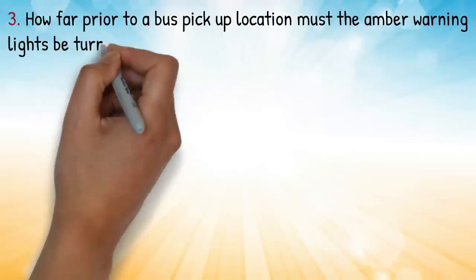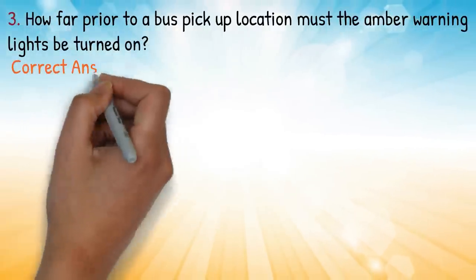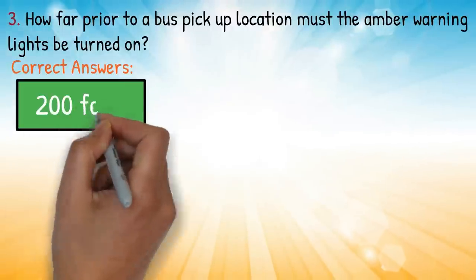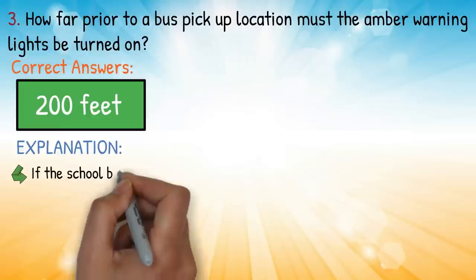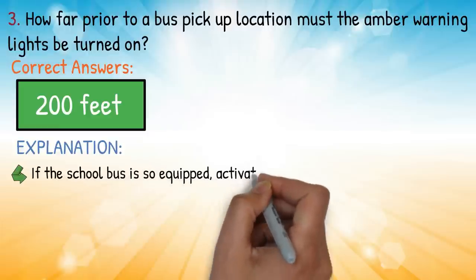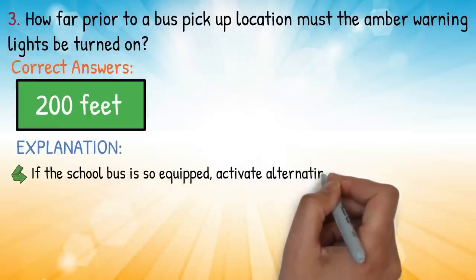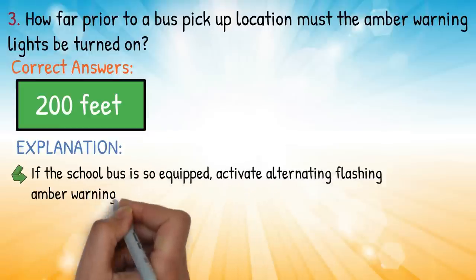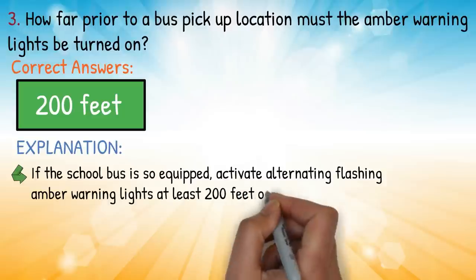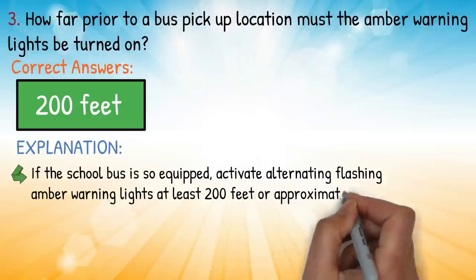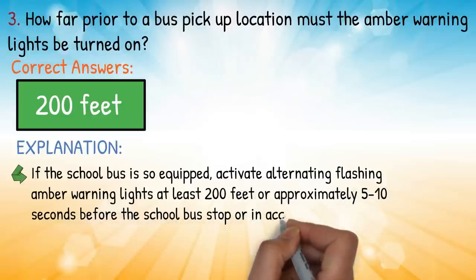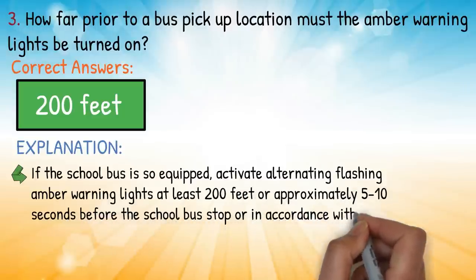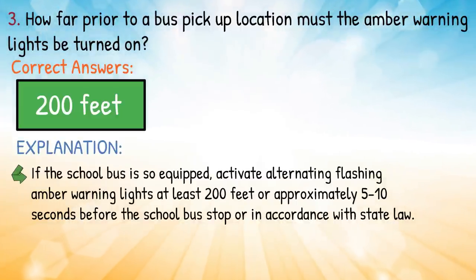Also evacuate when there is an imminent danger of collision or a need to quickly evacuate because of a hazardous material spill. Question three: how far prior to a bus pickup location must the amber warning lights be turned on? Correct answer: 200 feet. Explanation: activate alternating flashing amber warning lights at least 200 feet, or approximately 5 to 10 seconds, before the school bus stop, or in accordance with state law.